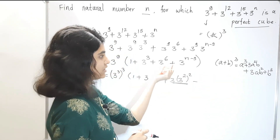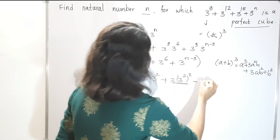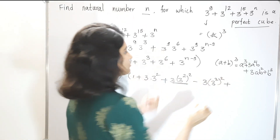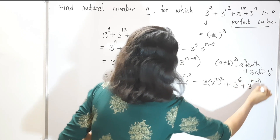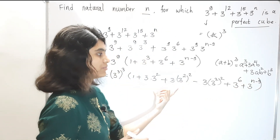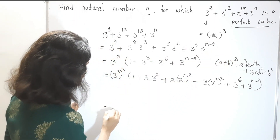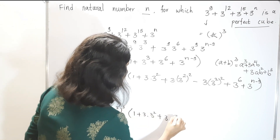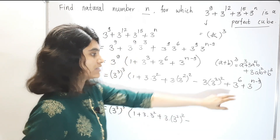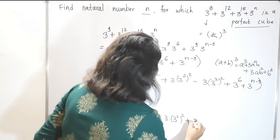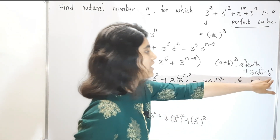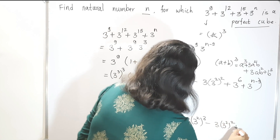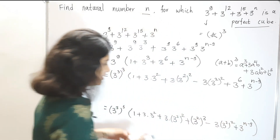Since we don't have all the needed terms, we add and subtract as required. So we rearrange: (3^3)^3 times [1 + 3·(3^2) + 3·(3^2)^2 + (3^2)^3], and then we have the remaining terms 3·(3^2)^2 + 3^(n−9).